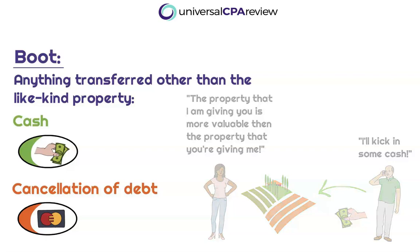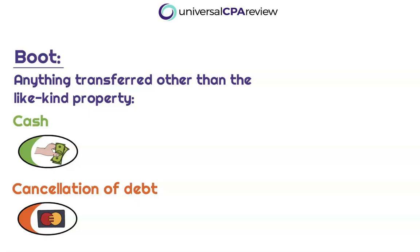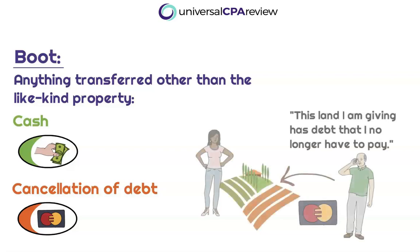The primary boot items that typically show up on the exam consist of cash boot and cancellation of debt. In some cases, we might be trading land in exchange for another piece of land, but the land we're giving might have a mortgage associated with it. The question we need to ask ourselves is: who is assuming that mortgage? Let's say Kenneth is exchanging land with Leslie, and Leslie is also assuming the mortgage associated with the land that Kenneth is giving her — that is an economic benefit to Kenneth, and that is considered boot.